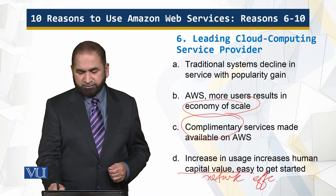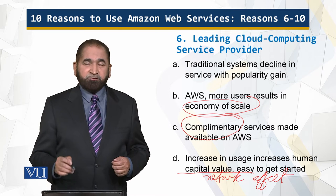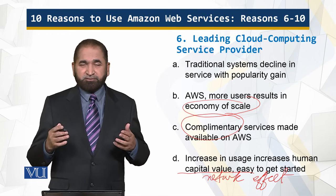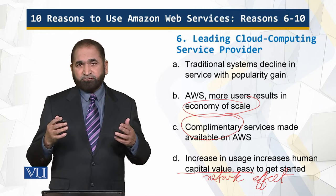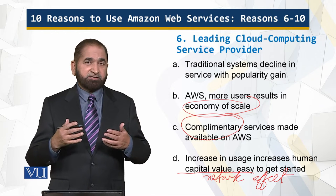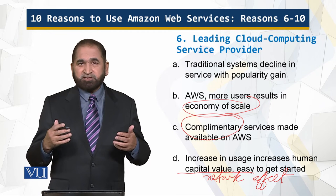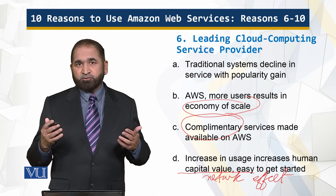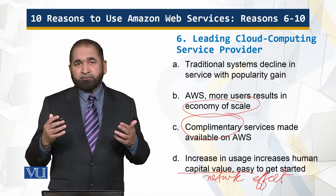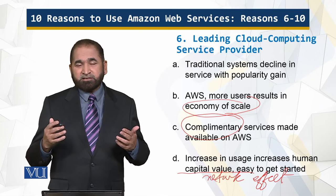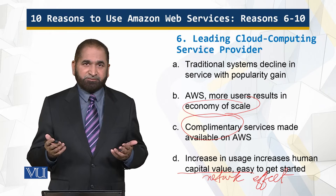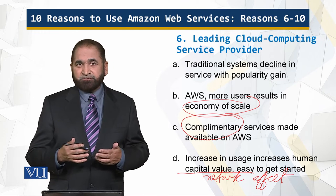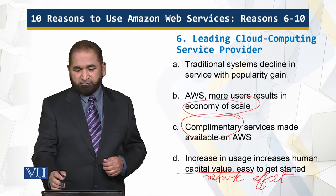Because of the network effect — which we have already discussed — if there are four users the network has six connections, and as the number of users increases the number of connections does not just double; it grows quadratically. So that adds value to it, and this is the benefit of being the leading cloud computing platform.